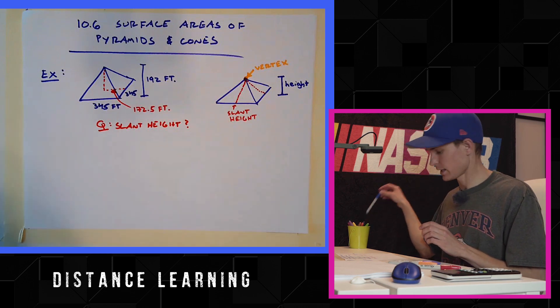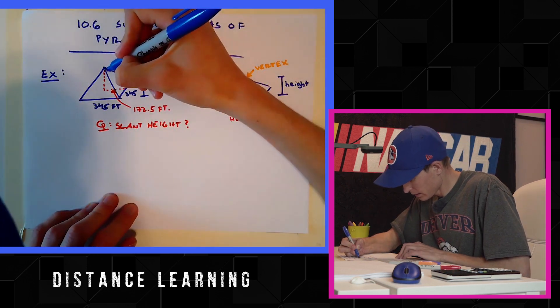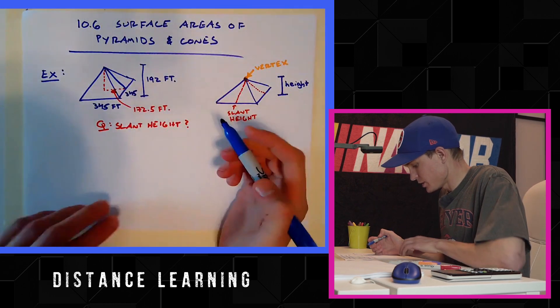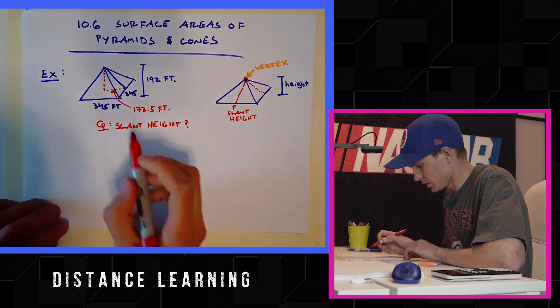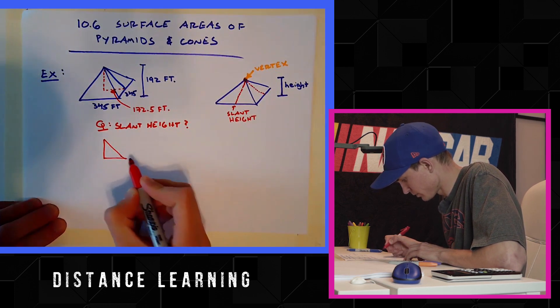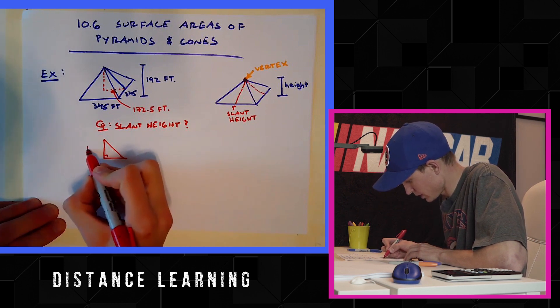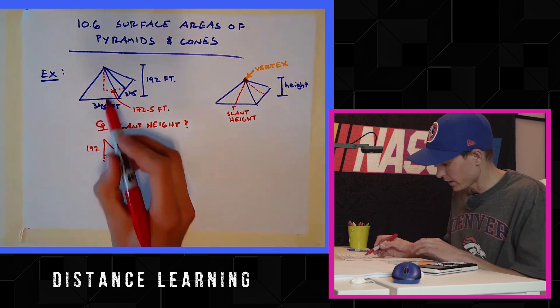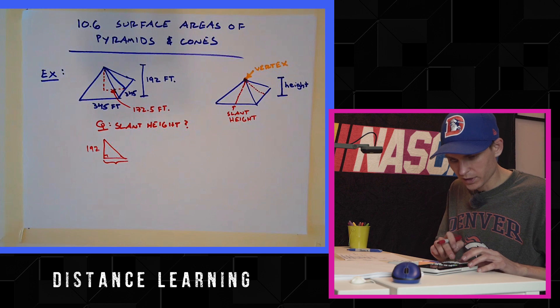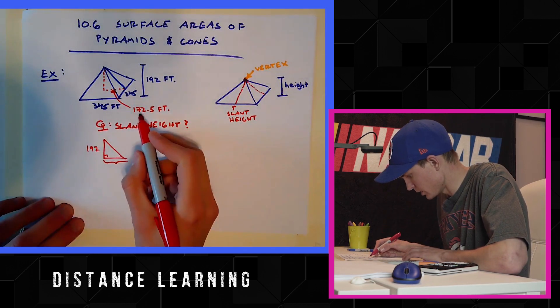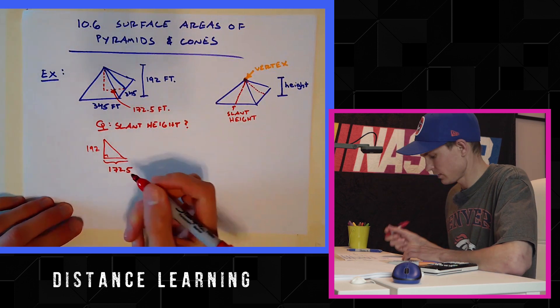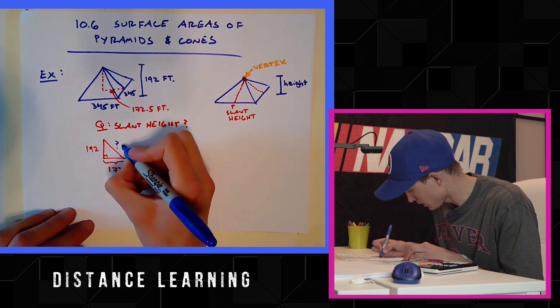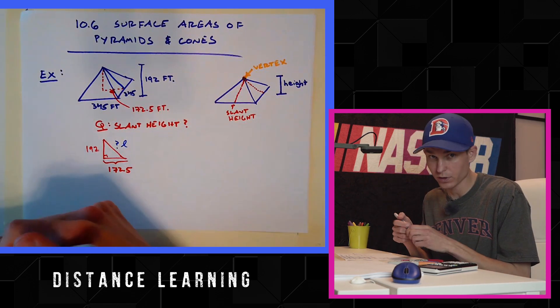For this they just want us to find the slant height. And it is not 192, it is not 172.5, it is not 345. So how do you, you may say, how? Well the slant height would be this right there. You cannot tell that it's different than purple but it's blue marker not purple. That right there, that is drawing, is your slant height. So occasionally you will need to do the Pythagorean theorem for these things. So it's 192 tall.